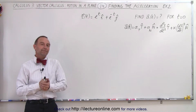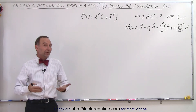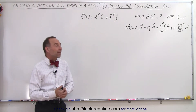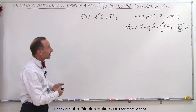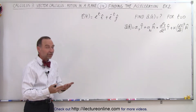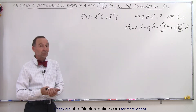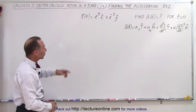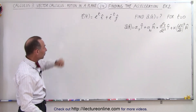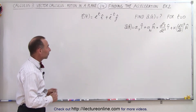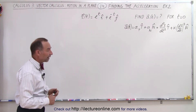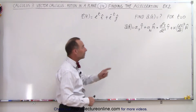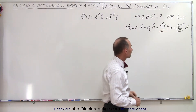Welcome to our Lecture Online. To get a better understanding, let's do one more example of how to find the acceleration vector — in this case the normal component as well as the tangential component — when the position vector is given as follows, and we're going to do it for the value when t is equal to zero.